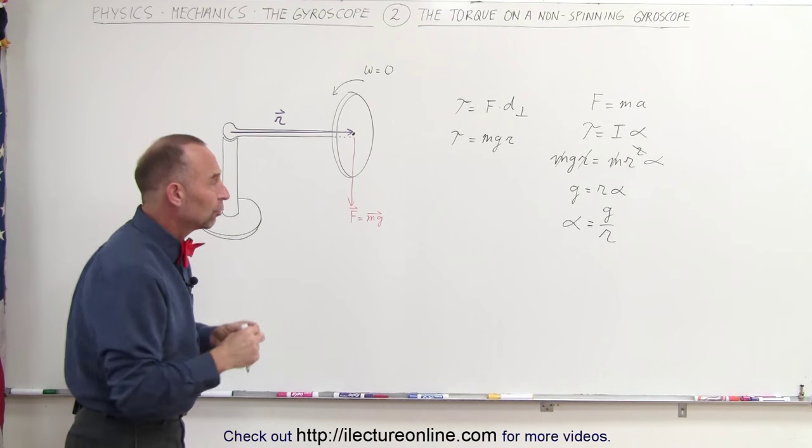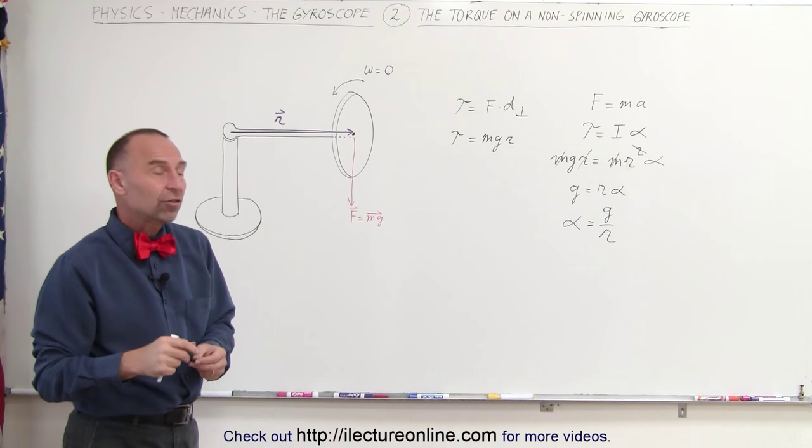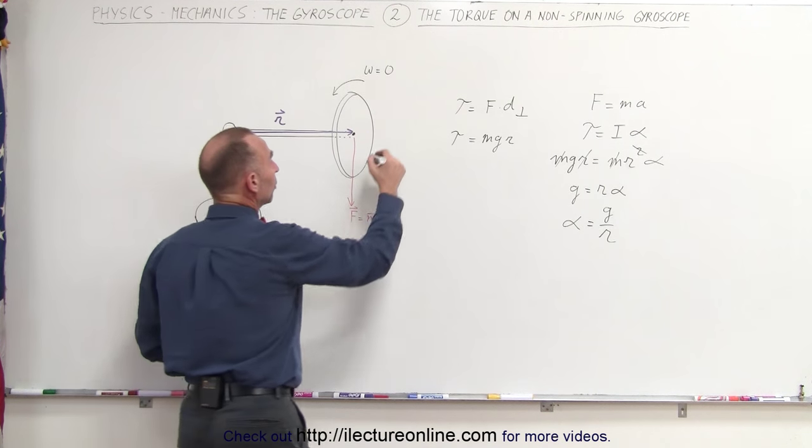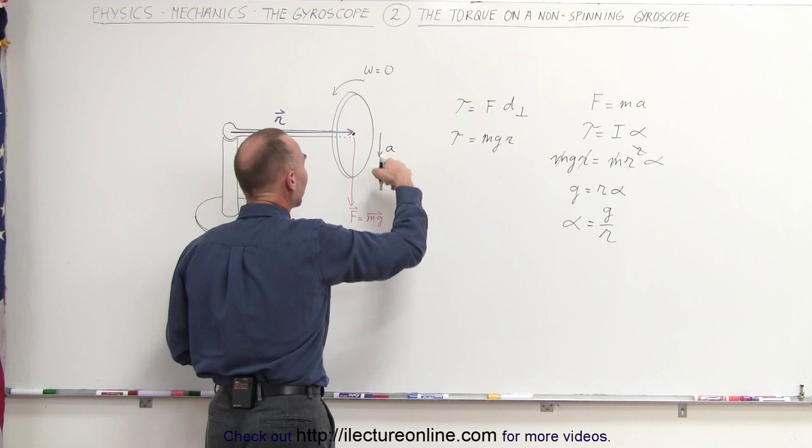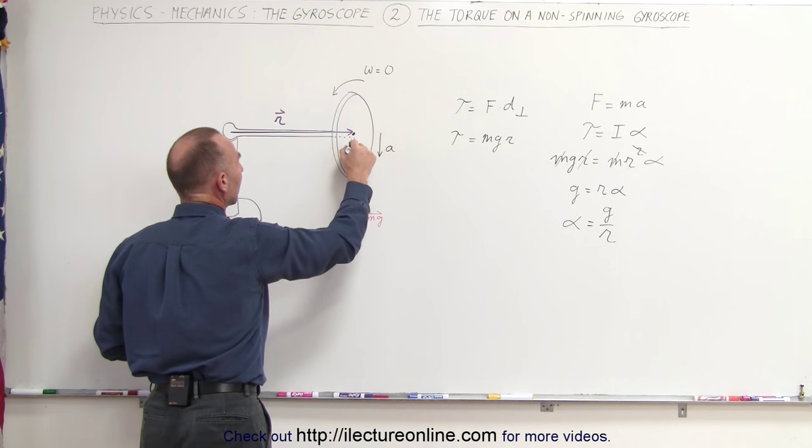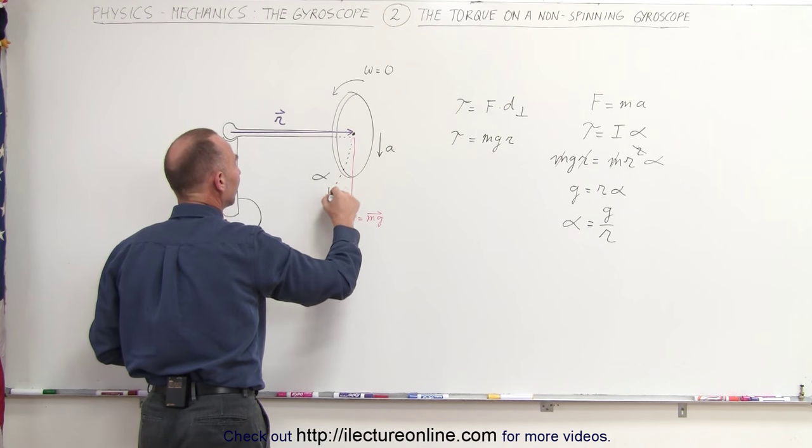Now when something is rotated, there's a relationship between the angular acceleration and the tangential acceleration. In other words, at the very moment that this is let go, there will be an acceleration downward because there is an angular acceleration in this direction called alpha.